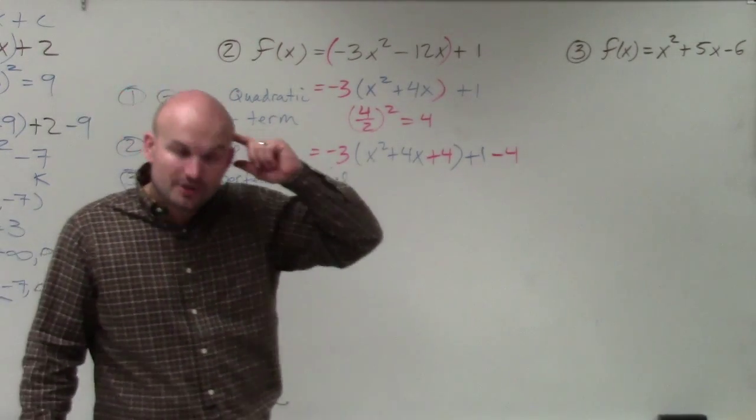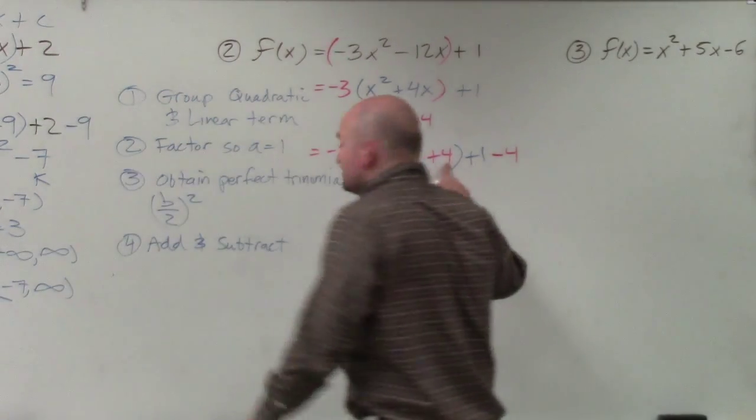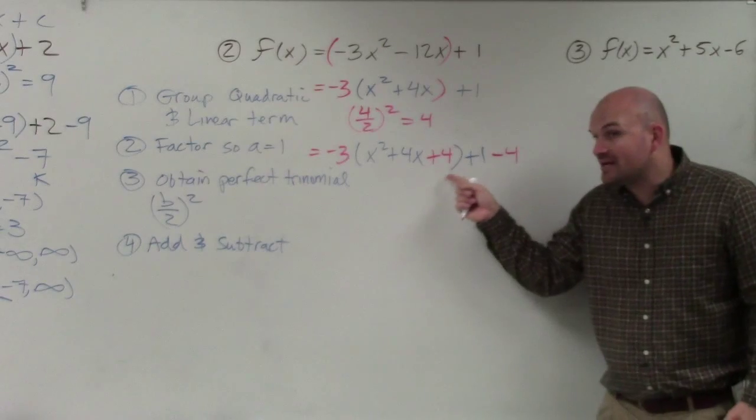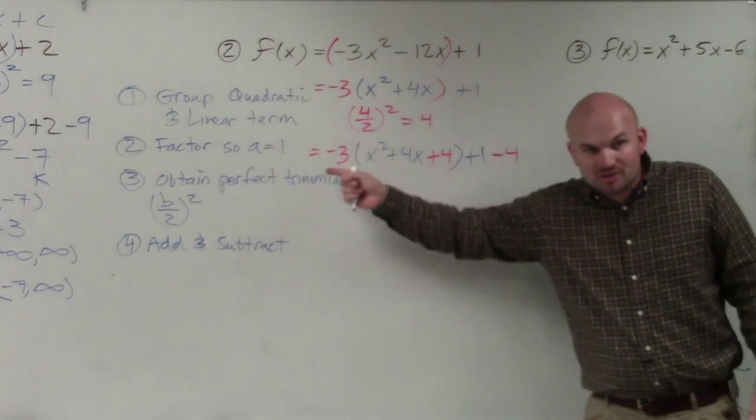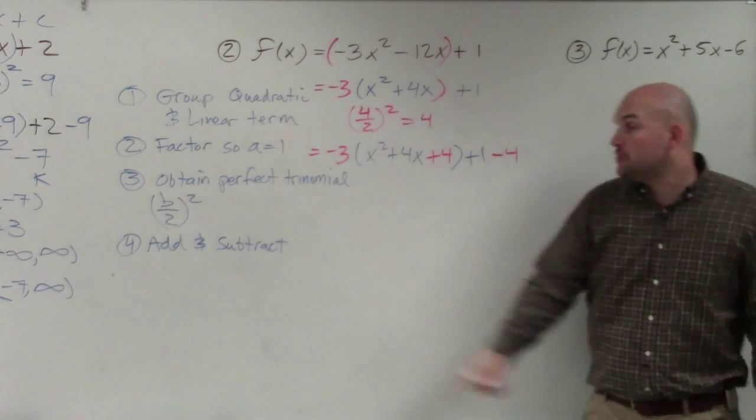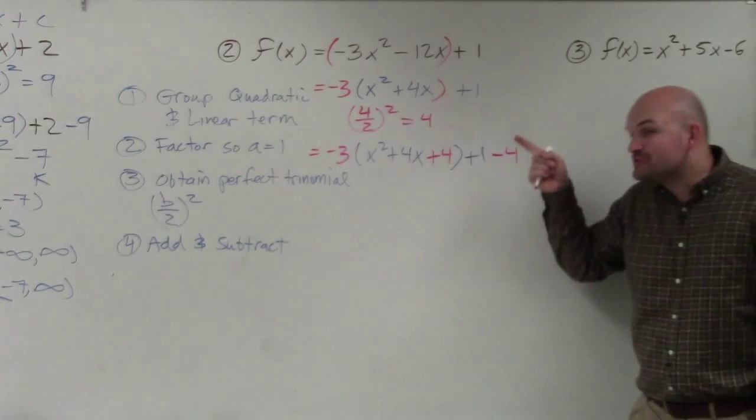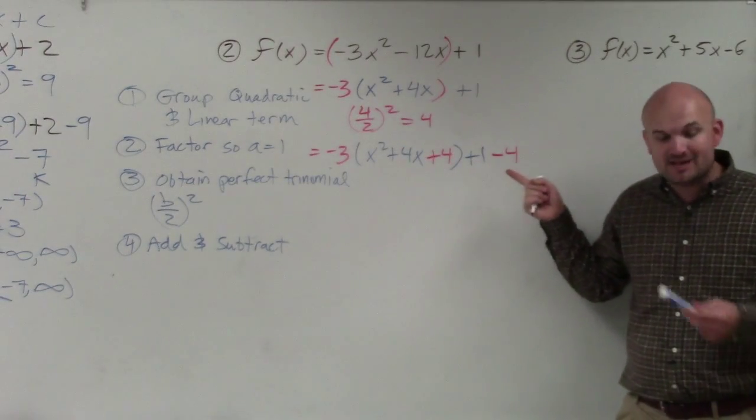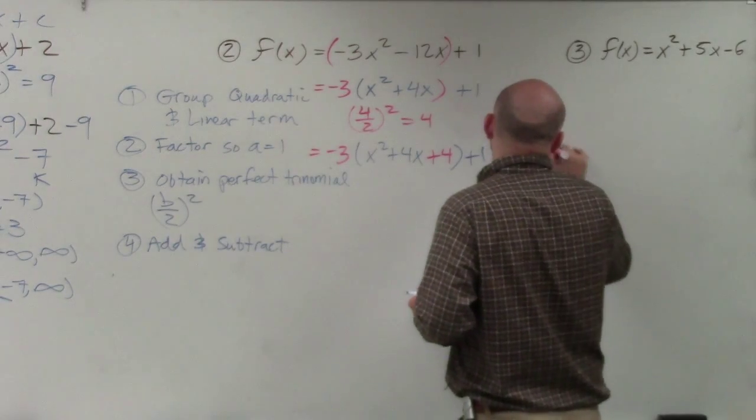However, I just need you guys to understand and follow me here that this 4, since you added this 4 inside the parentheses, inside the parentheses this 4 is being multiplied by a negative 3. So if you added a 4, that positive 4 you added is being multiplied by a negative 3. So if you subtract a negative 4 on the outside, you also have to multiply it by a negative 3.